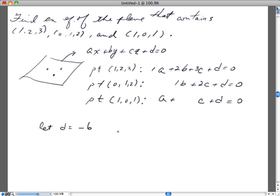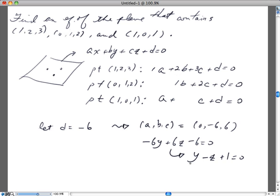When you do that, what you'll end up with is ABC = (0, -6, 6). So you could conclude that the equation will be -6Y + 6Z = -6, or if you reduce that further, Y - Z + 1 = 0. And that right there will be the solution.